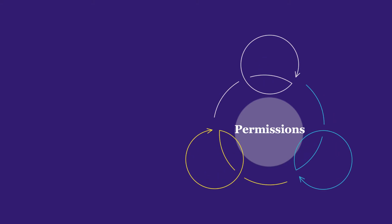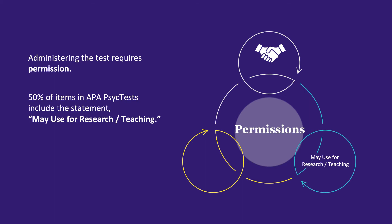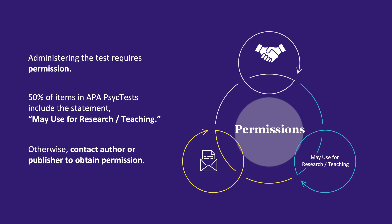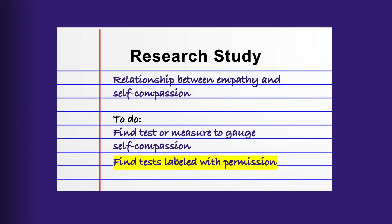Before you run your search, there's one more filter you may want to add. If, as in our practice example, you're planning to administer this test to other people as part of a school project or in a clinical setting, you'll need to make sure that you have permission to do so. About half of the items in APA PsychTest include the permission statement "may use for research/teaching." In other cases, you may have to contact the author or publisher to obtain permission directly from them. In our scenario, we know that we want to use the measure that we find for research, so let's narrow our search to only find results that are labeled with this kind of permission.